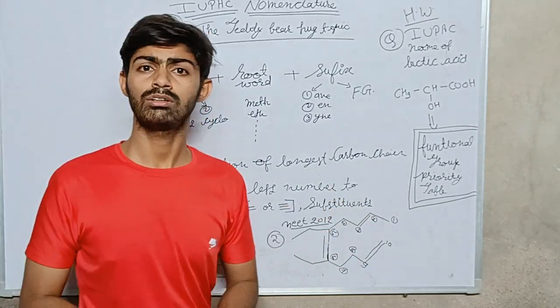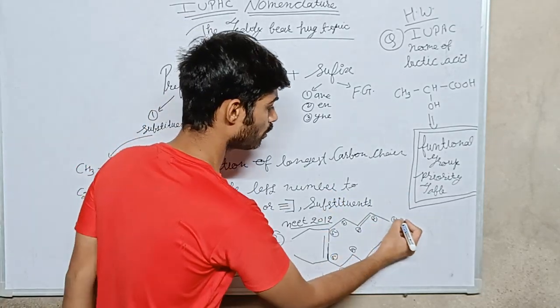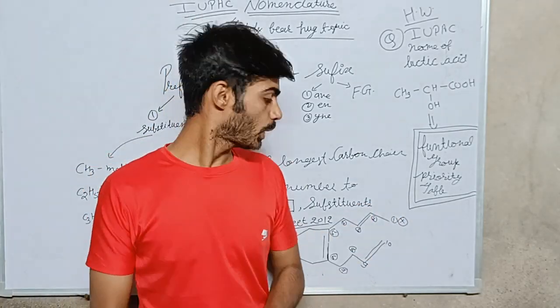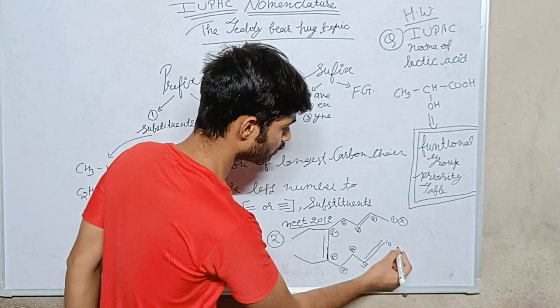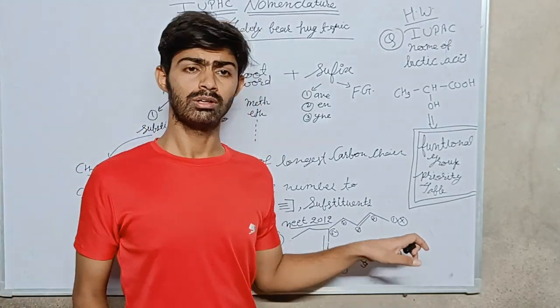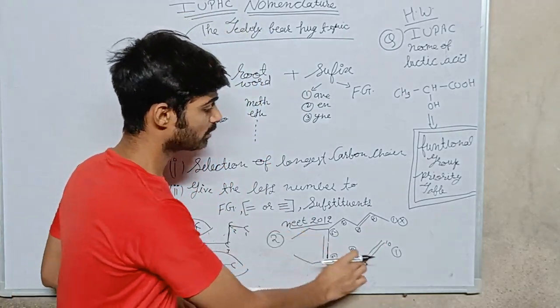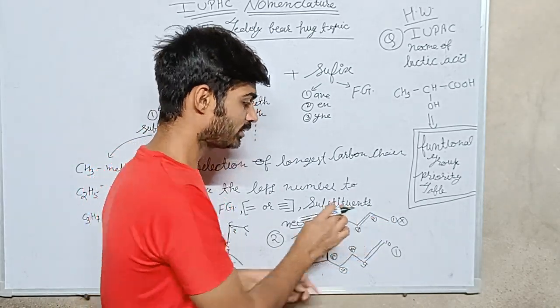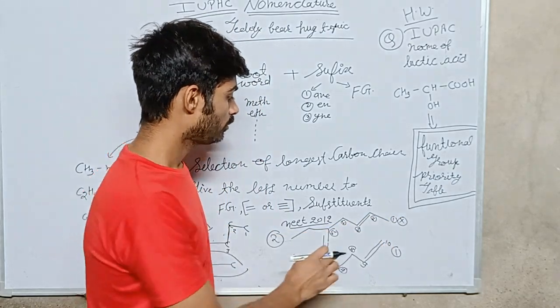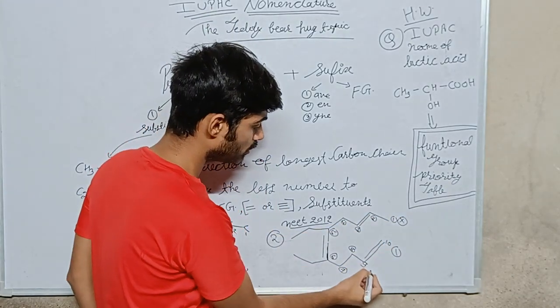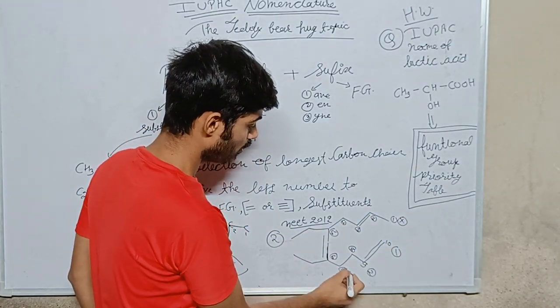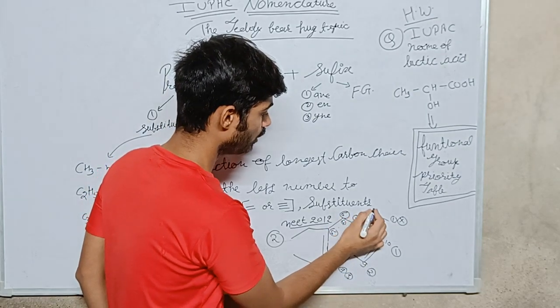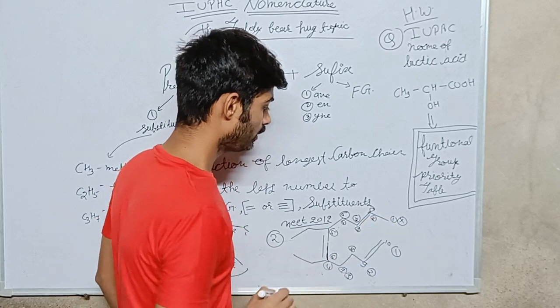So I will give the first number here, because the double bond gets number one. First number here—from here the double bond gets the second number. So I will give the first number from here: 1, 2, 3, 4, 5, 6, 7, 8, 9, and 10.